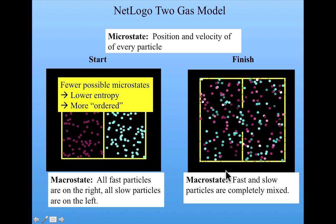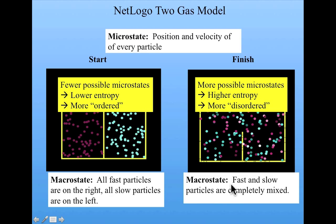Well, if you think about it, our macrostate on the left-hand side corresponds to fewer possible microstates than the macrostate on the right-hand side. That is, there's more ways that different particles could be arranged in terms of position and velocity to create a completely mixed fast and slow particle macrostate. Then there are ways in which you could create this more ordered macrostate.